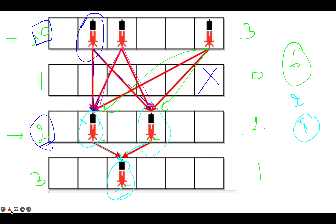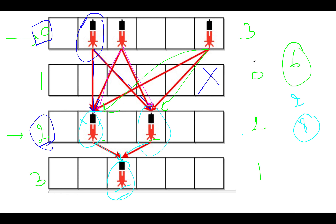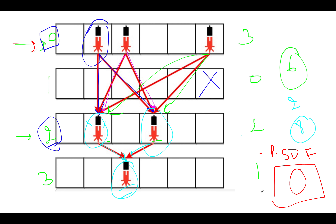Now comes the question: how are we going to solve this? I'll create a variable that will store the frequency of security devices in the previous row — let's name it 'previous security device frequency' and initialize it to zero. Let's start the iteration. In the first row, there are three security devices. I'll multiply the previous count with the current count and add it to the answer: zero times three gives zero. I'll also update the previous security device frequency to three for the next iteration.